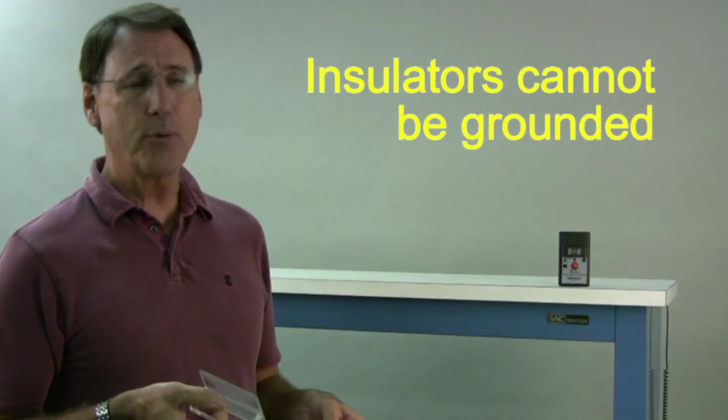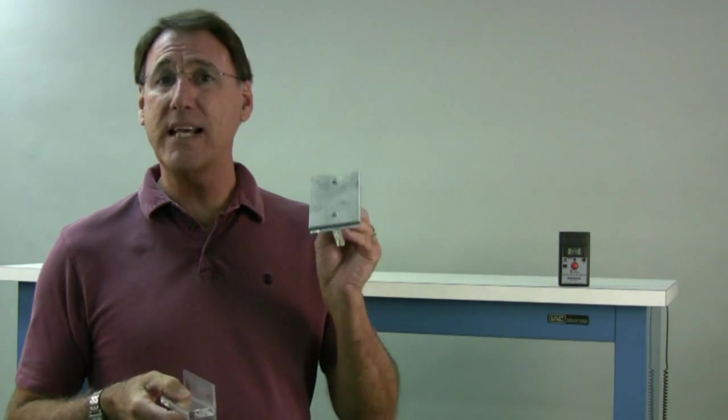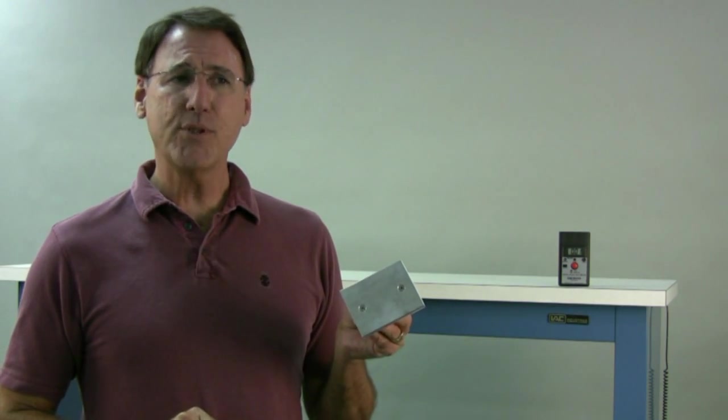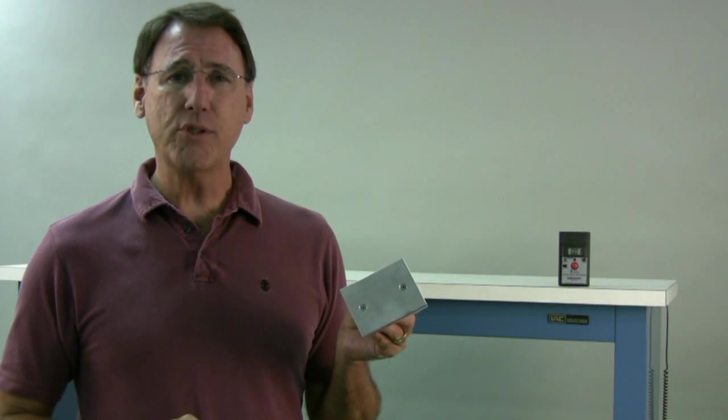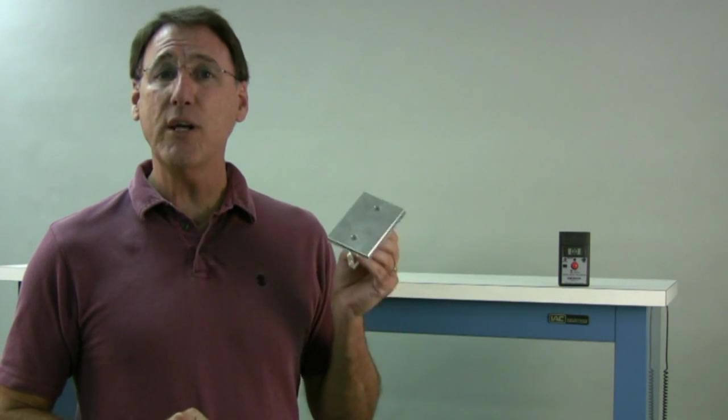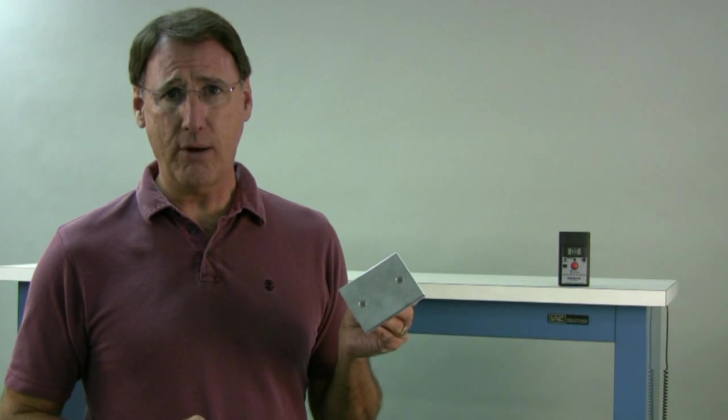The answer is you cannot ground an insulator. It's a little bit easier if you look at the metal as a conductor and the plastic as a non-conductor. And the items that are dissipative, another word we use in ESD control, dissipative or conductive, is you can ground and remove electrostatic charges to ground.